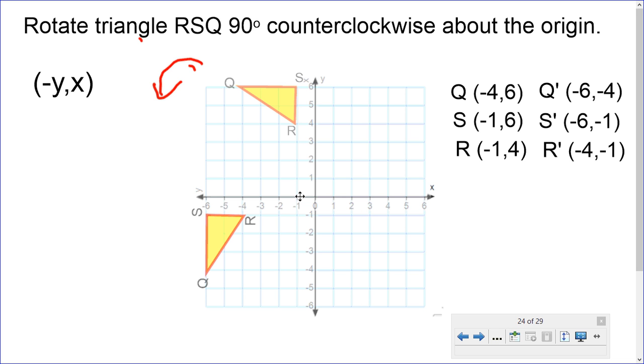Coordinate for R was (-1, 4). So, now it's down here at (-4, -1). Again, we switch places, and negate the y coordinate. It switched places, and negated the y coordinate. That's what it looks like when we do counterclockwise, which is going to the left.